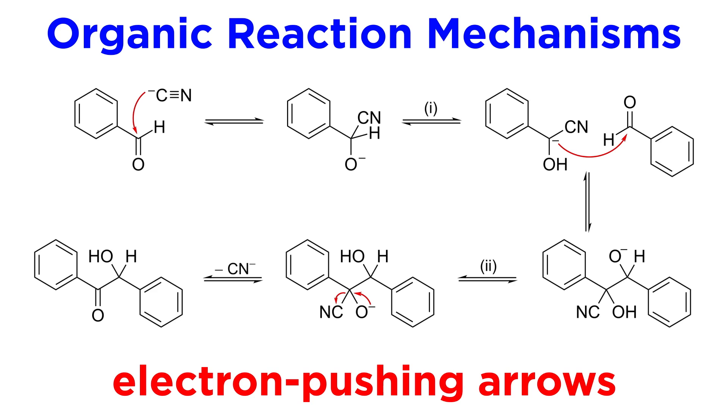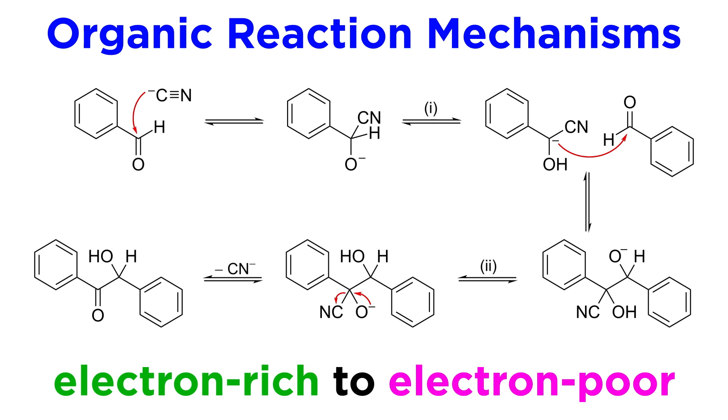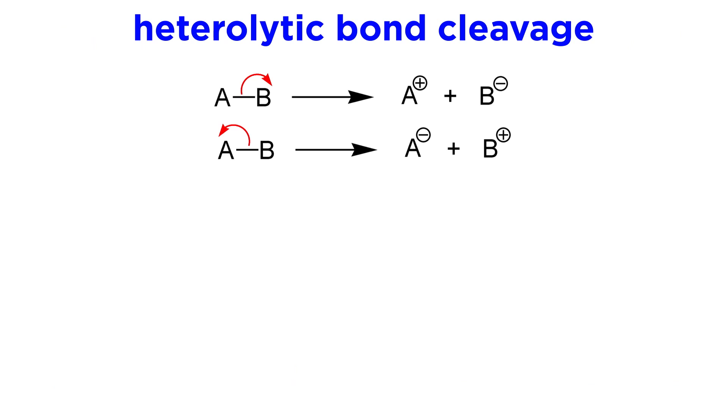In order to do this we need some symbols, and the most important one will be electron pushing arrows. These always start at electron density and point in the direction that the electron density moves, so they always go from electron rich to electron poor. Let's see how this works, starting simply with examples of bonds breaking.